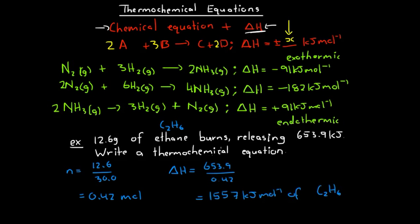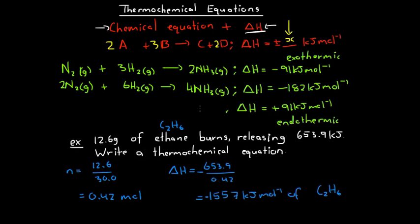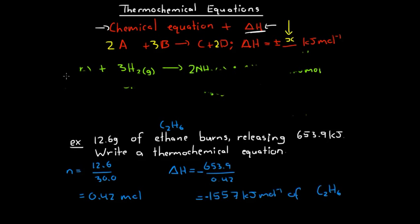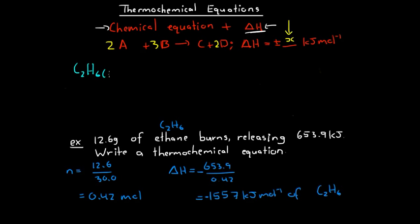Since we're releasing energy, we automatically put a negative sign, so our delta H is negative 1,557 kilojoules per mole. It's important that we write kilojoules per mole of C2H6 to avoid confusion later on. The next step is to figure out our chemical equation for the burning of ethane — this is a standard combustion reaction. Ethane reacts with oxygen, and for a thermochemical equation we should state that we're dealing with gaseous ethane, gaseous oxygen, and both products are in the gaseous state as well — otherwise that could affect our value for delta H.